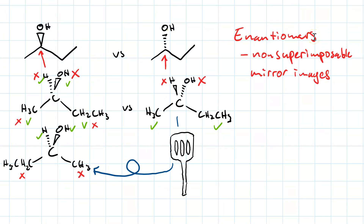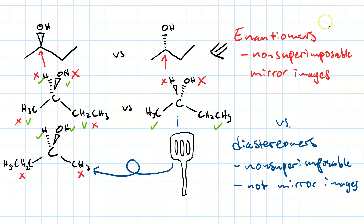Enantiomers are stereoisomers that are non-superimposable mirror images. The other kind of stereoisomer is a diastereomer, which is non-superimposable and not a mirror image, despite having the same chemical formula and the same connectivity. Enantiomers are molecules that have one or more chirality centers where all the chirality centers are reversed from one molecule to the next. These two isomers of 2-butanol are enantiomers. Diastereomers are non-superimposable and not mirror images, and this includes cis-trans stereoisomers.